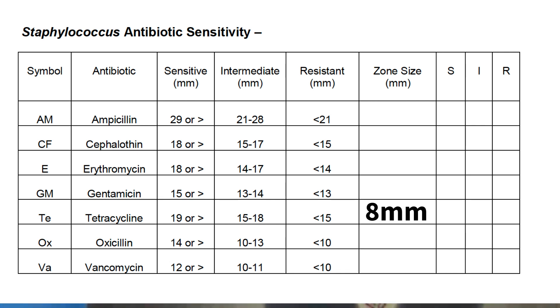So again, when we compare this to our chart, 8 millimeters falls into the 15 millimeters or less for tetracycline. That makes us conclude that this bacteria, Staphylococcus, is resistant to the antibiotic tetracycline. Thank you.